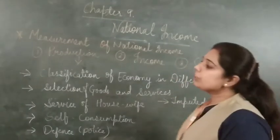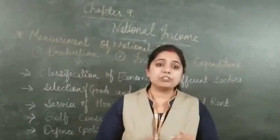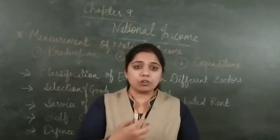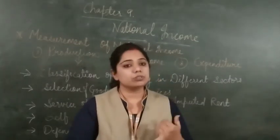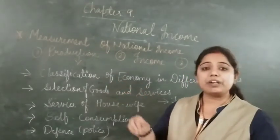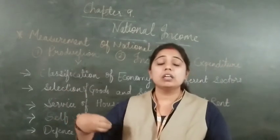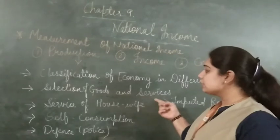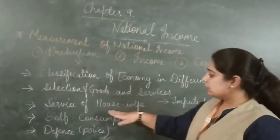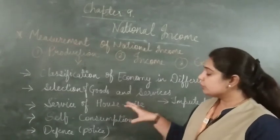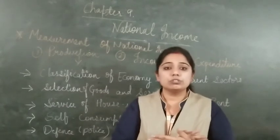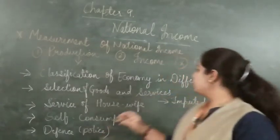There is also imputed rent. Suppose I have a bungalow and I have given it out for rent. That rent is called imputed rent. The money I receive as rent is income for me and is calculated in the national income. To summarize: classification of economy means dividing work into sectors and calculating income from those sectors. Selection of goods means only final goods sold in the market are selected. Services used only for oneself are not counted in national income.